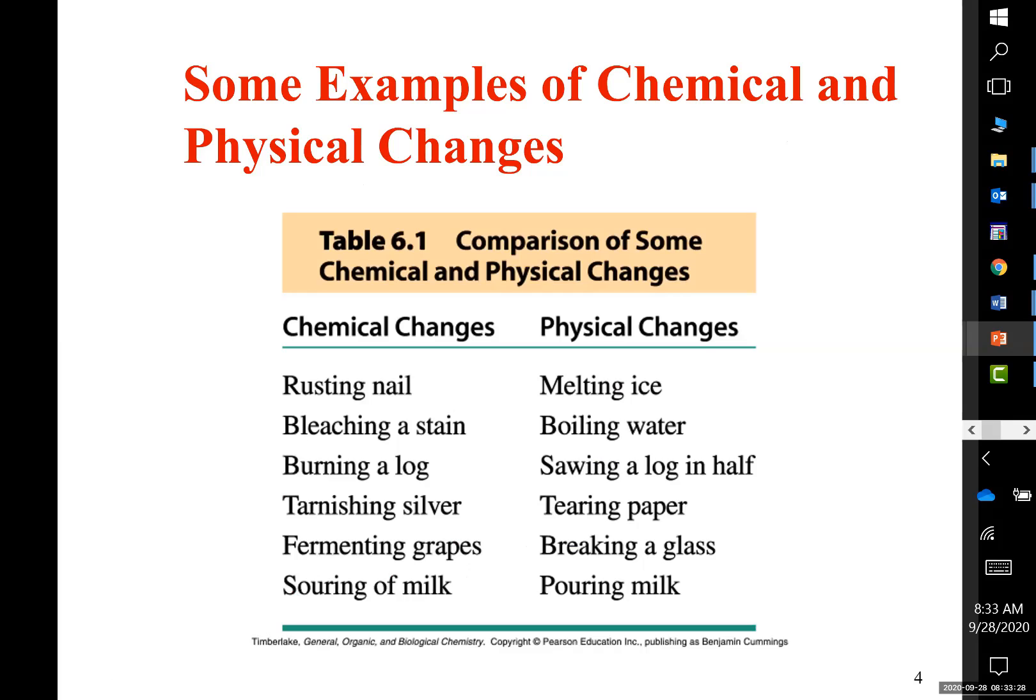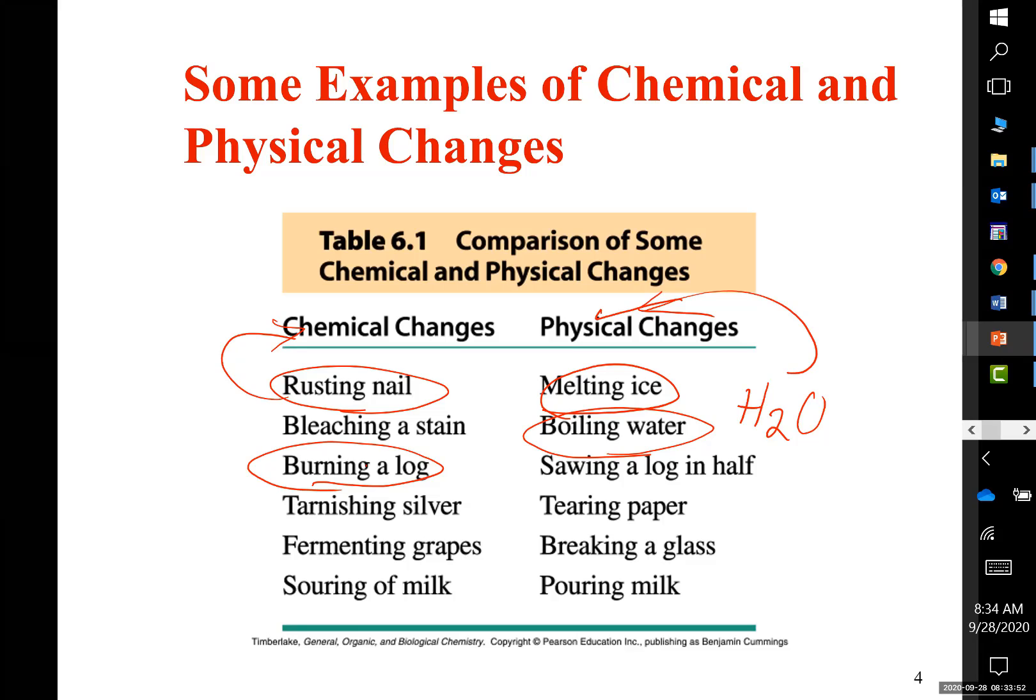So if I go to the next slide, let's compare a few of these examples. Melting of ice - physical change. Rusting of a nail - chemical change. Boiling water - water when it is liquid, when it is steam, it's always the same formula H₂O. That's a physical change. But burning a log, you're burning, you get lots of ashes, carbon dioxide and water. Total change of the structure. That's a chemical change. We talked about tarnishing silver.